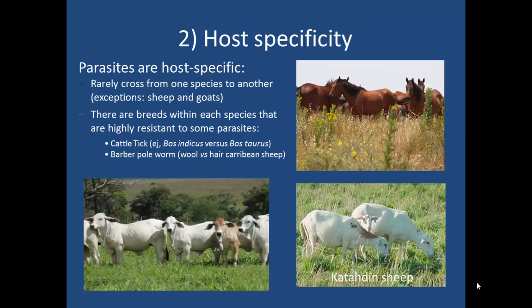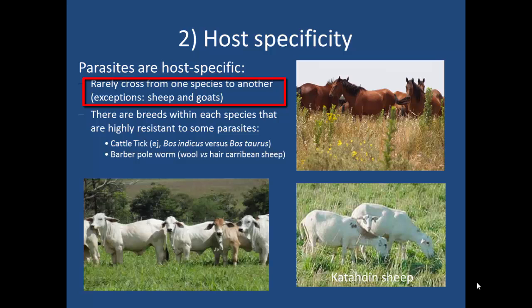Parasites tend to be very host specific — different species don't share the same parasites and they rarely cross from one species to another. This will be very important when we talk about integrated management programs. One way to break the cycle, if you had the luxury, would be to rotate between cattle, sheep, and goats, as these species tend to share different parasites. However, sheep and goats being different species do share the same parasites, and llamas and alpacas can get the same parasites as both cattle and small ruminants.